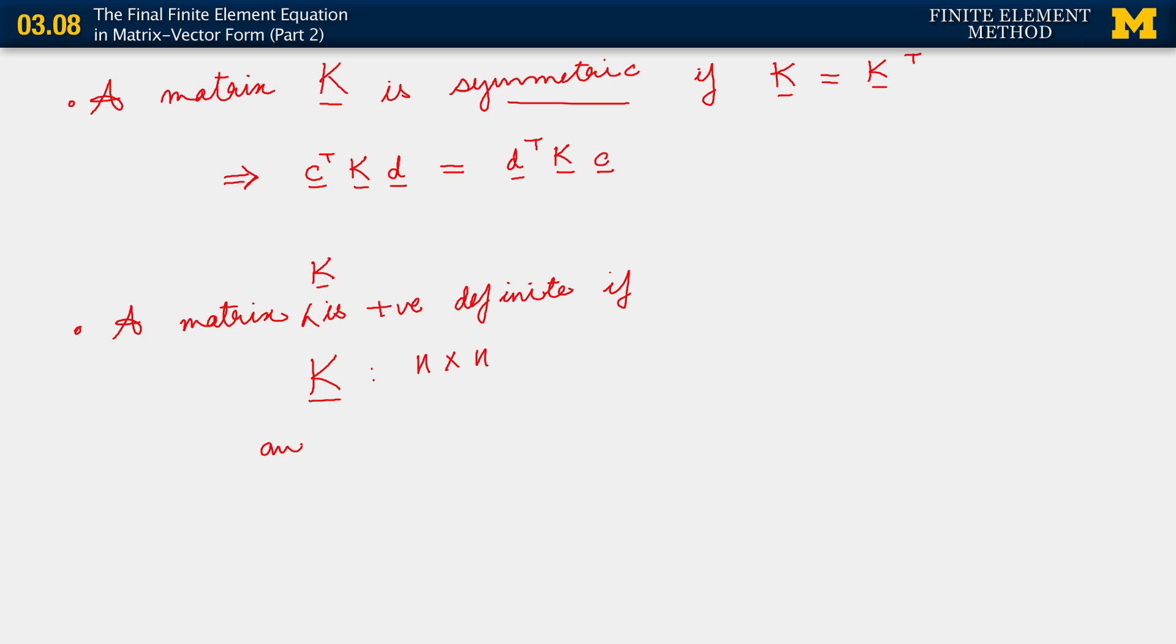If, and for all D belonging to R^n - for all N dimensional vectors - we have D transpose KD is greater than or equal to 0.